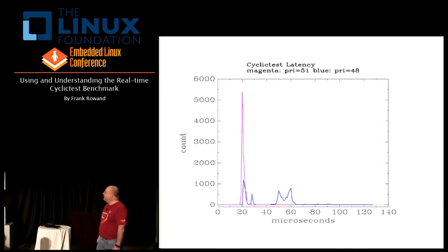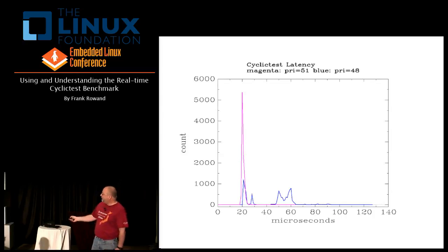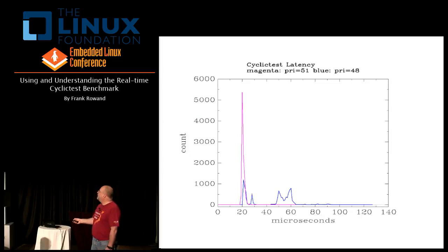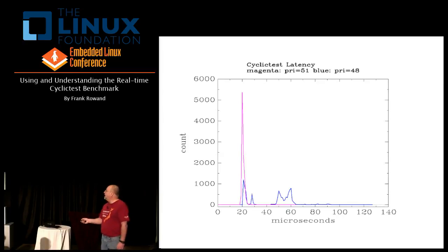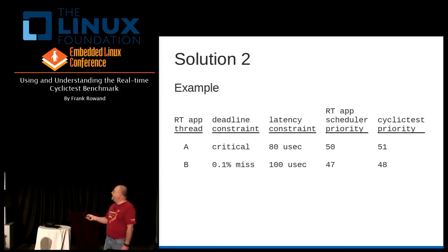Here's an example that I've actually measured. This purplish magenta line is the latency that the highest priority task can expect — that's why I run cyclic tests at a priority of 51. This is a histogram. The x-axis is what is my latency in microseconds, and the vertical axis is how often did I encounter that specific latency. Roughly 5,500 times I had a latency of around 20 microseconds for that most critical application. The high water mark is out here around 65 microseconds. Is 65 microseconds worst case good enough? Yeah, I only needed 80 microseconds — I've got a little bit of headroom, looking good.